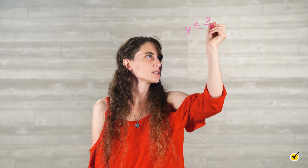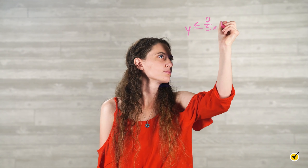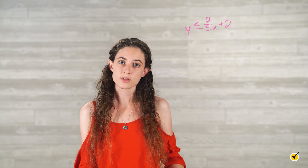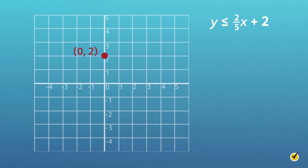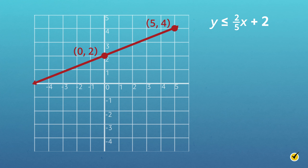Let's try one more. Consider the inequality y is less than or equal to 2/5x plus 2. First, graph the line on a coordinate plane. Since the y-intercept b is 2, the line will intersect the y-axis at (0, 2). The slope m is 2/5, so starting at (0, 2), move up 2 units and right 5 units to the point (5, 4). Since the inequality sign is less than or equal to, connect the ordered pairs with a solid line, indicating that points on this line are possible solutions.